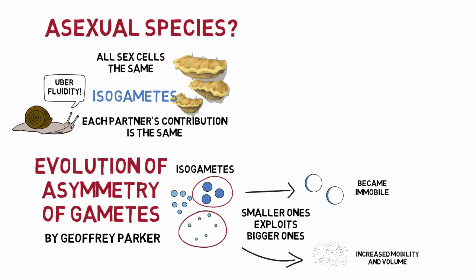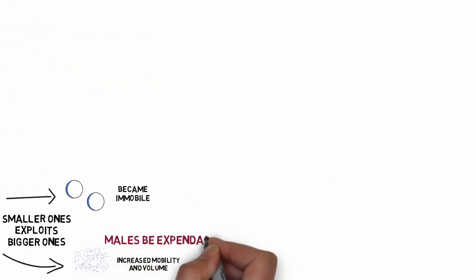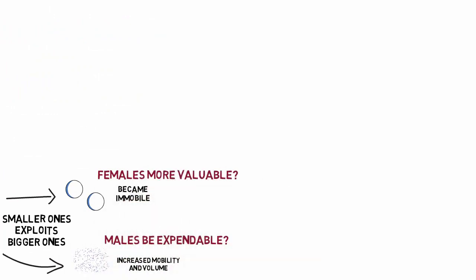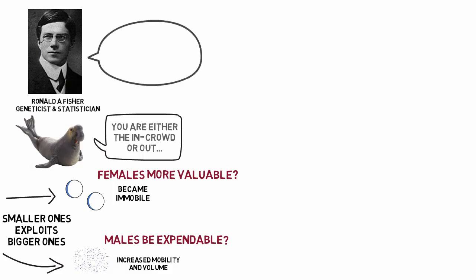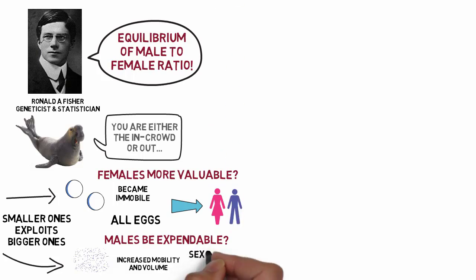If one male can produce enough sperm to impregnate hundreds of females, wouldn't that make males less numerous than females? Wouldn't males be expendable, as females were more valuable to the species? For example, 4% of males accounted for 88% of all copulations observed in elephant seals, and most males never get a chance to copulate but still ate up the population's food resources. R.A. Fisher explains that male and female ratios tend to be equal. All eggs can develop into males or females, and the sex determination gene is in the chromosome carried by the sperm, differing by one chromosome only.